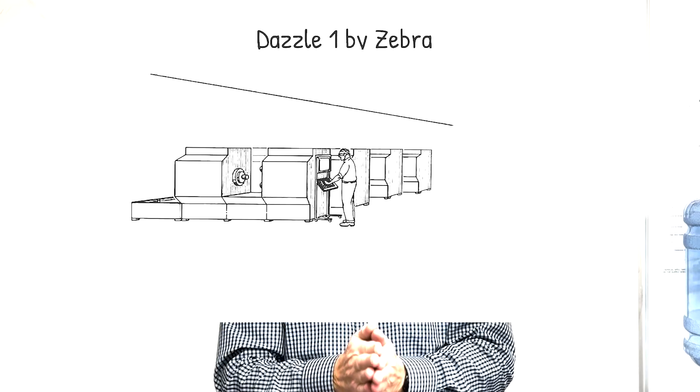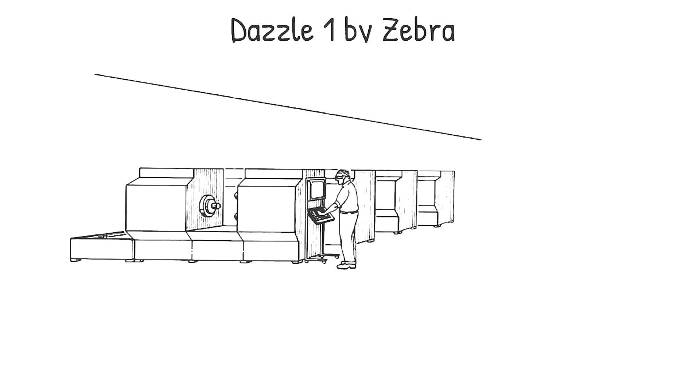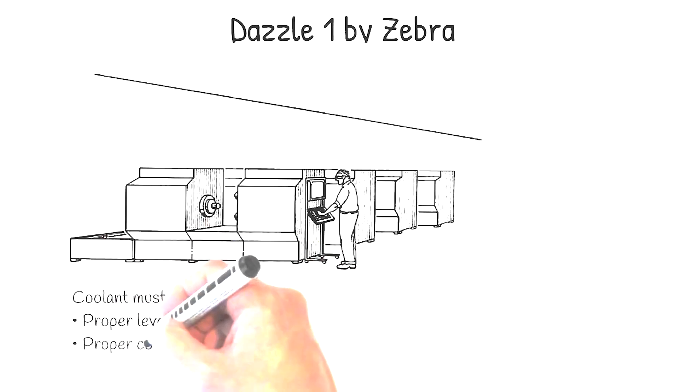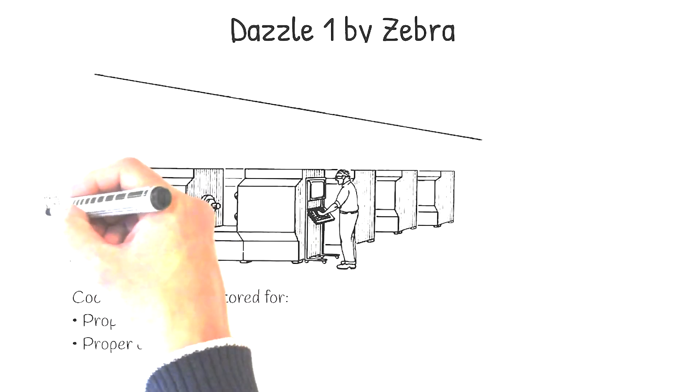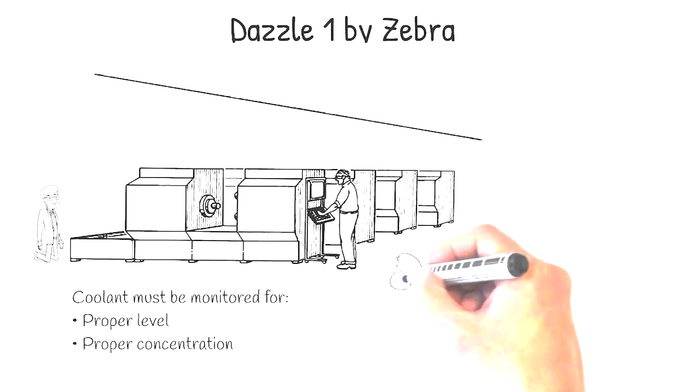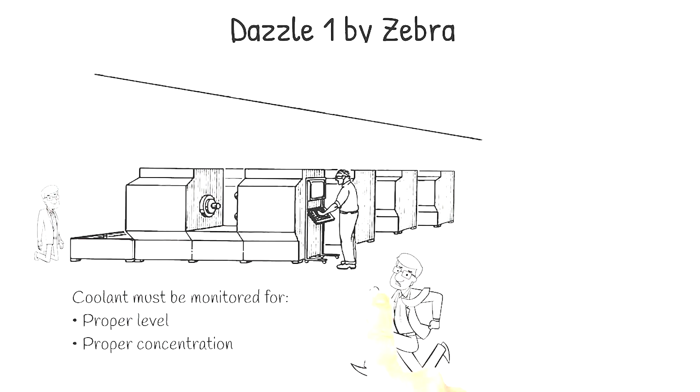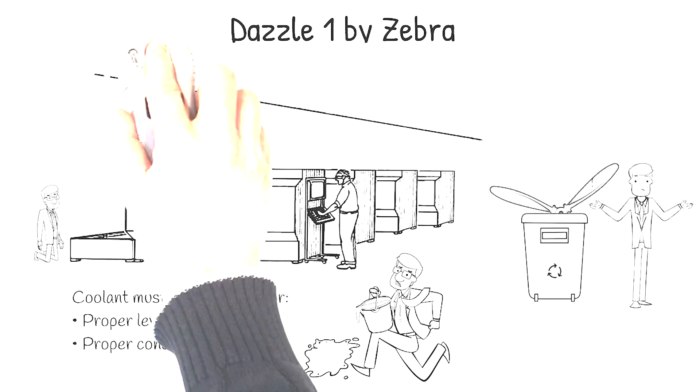In order to properly cool and lubricate machined parts, coolant must be kept at optimal levels and concentrations. Having employees frequently check coolant levels, test concentrations, and manually add coolant and water via inefficient bucket brigades results in lost time, sump overflows, and expensive wasted materials.